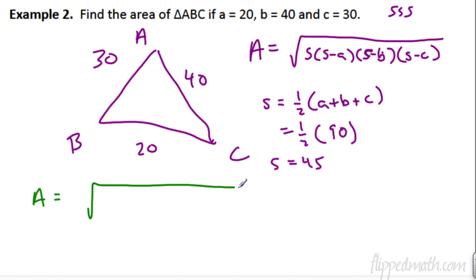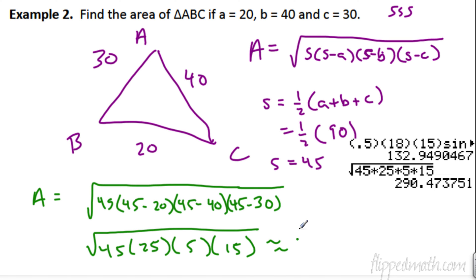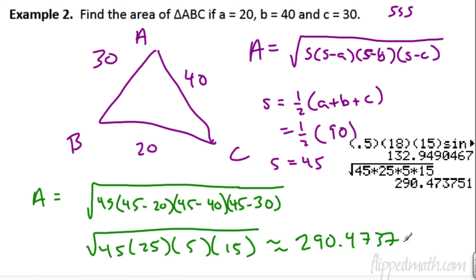Area equals square root of 45 times 45 minus A, which is 20, and then 45 minus B, which is 40, and then 45 minus C, which is 30. That equals the square root of 45 times 25 times 5 times 15. If you work all that out, we're going to end up with 290.4737. What do we have here? No units. So, we're just going to write units squared. That's what the area of this triangle would be. How simple is that?